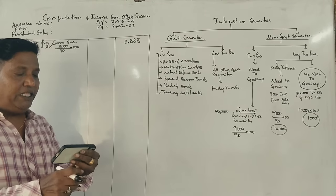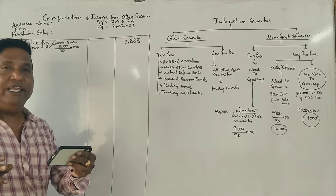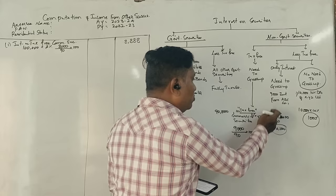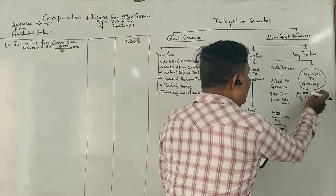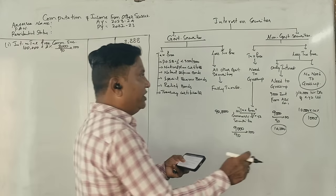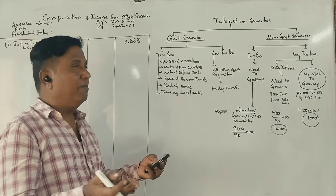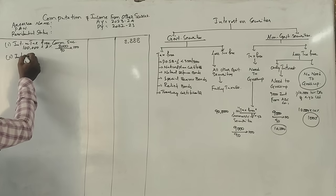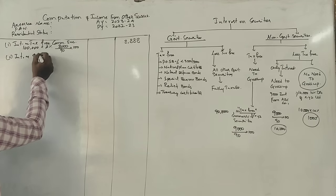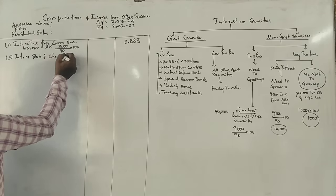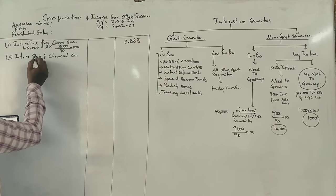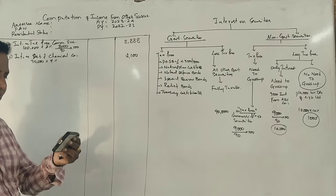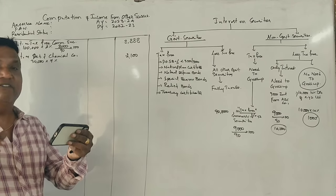Rs. 30,000, 7% debentures of a chemical company. There is no tax-free word mentioned. Interest on debentures of chemical company: 30,000 times 7% equals Rs. 2,100. Direct calculation, fully taxable.